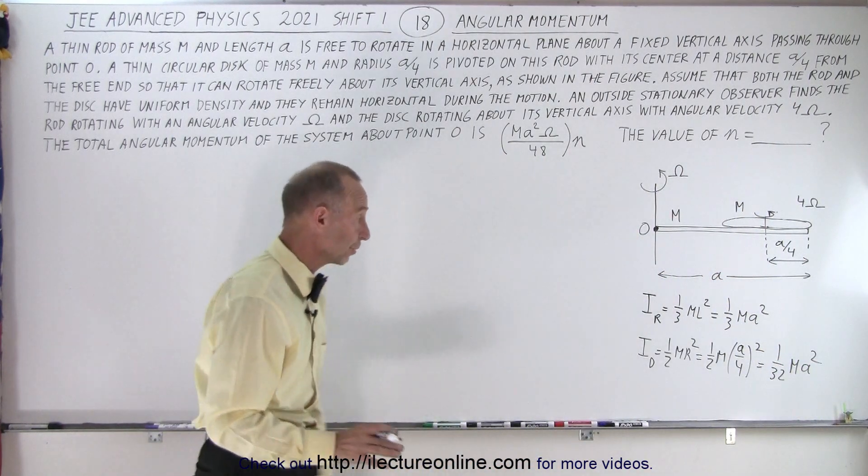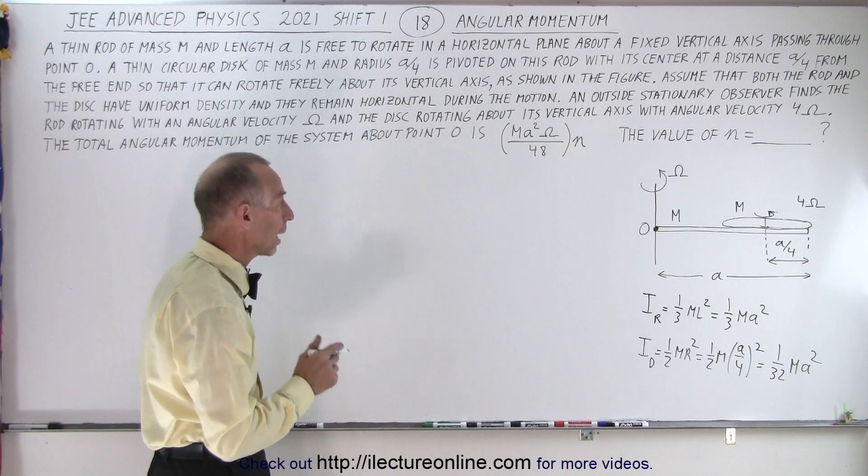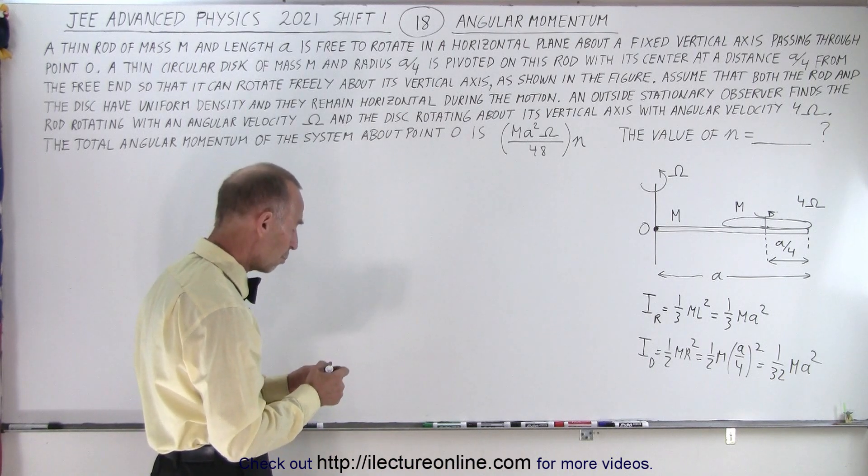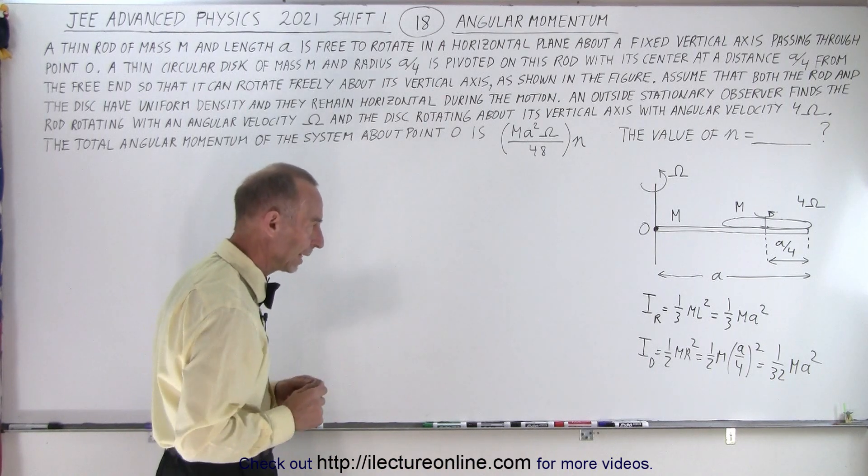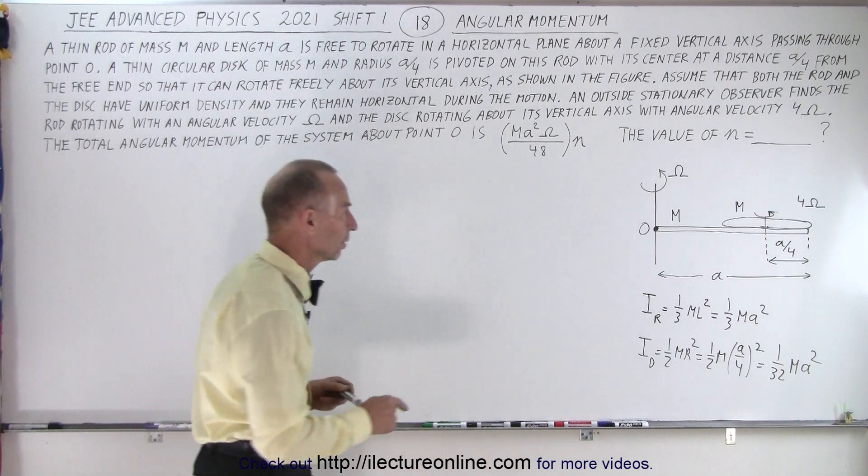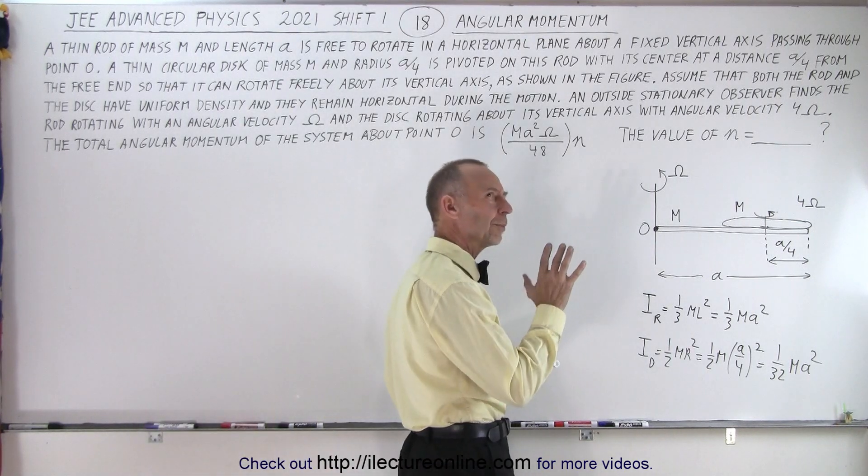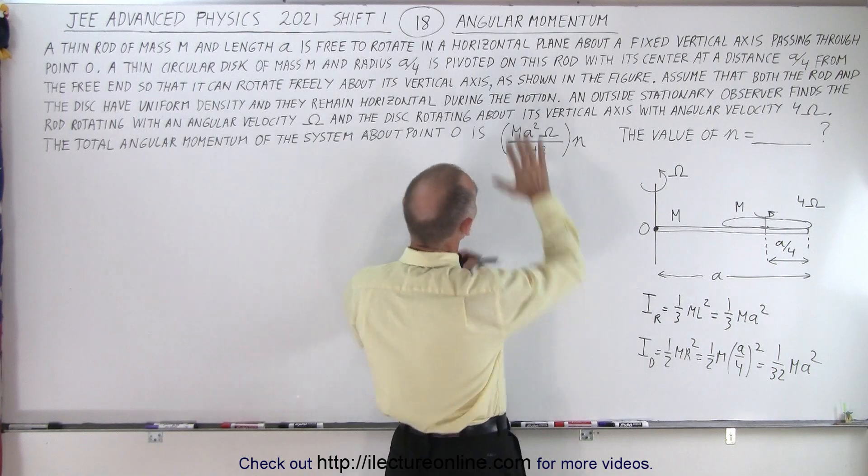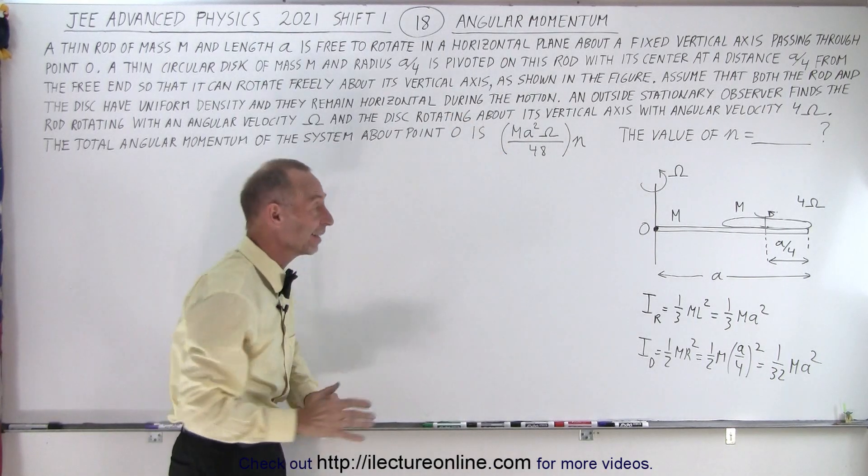All right, so now we have both the moment of inertia of the rod and the disk. Now we need to find the total moment of inertia of the system. There's going to be three components to it. Did I say that? I meant to say the angular momentum. Let me retract that.